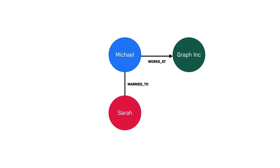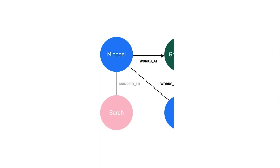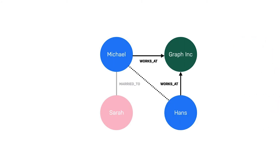All of a sudden, we know that we are looking at the beginnings of some sort of social graph. Now let's introduce a third person, Hans, to our graph. Hans also works for Graph Inc. along with Michael. Depending on the size of the company and the properties of the relationship, we may be able to infer that Michael and Hans know each other. If that is the case, how likely is it that Sarah and Hans know each other?